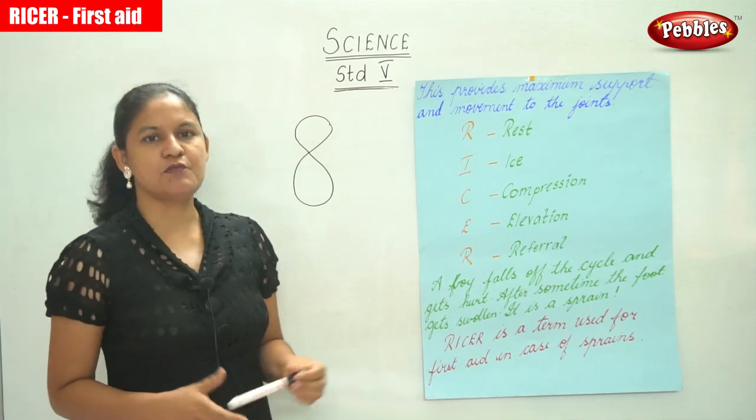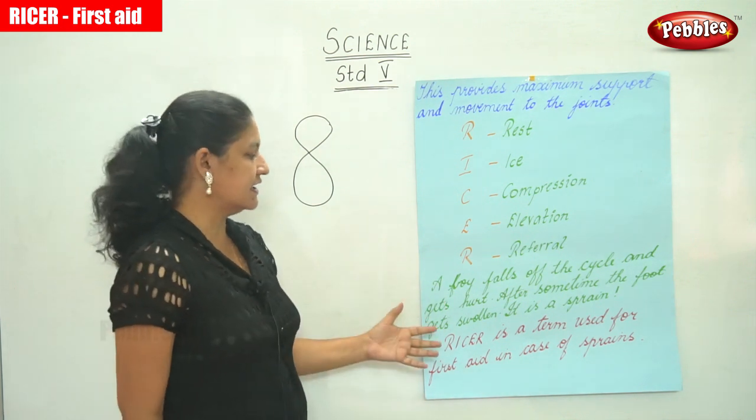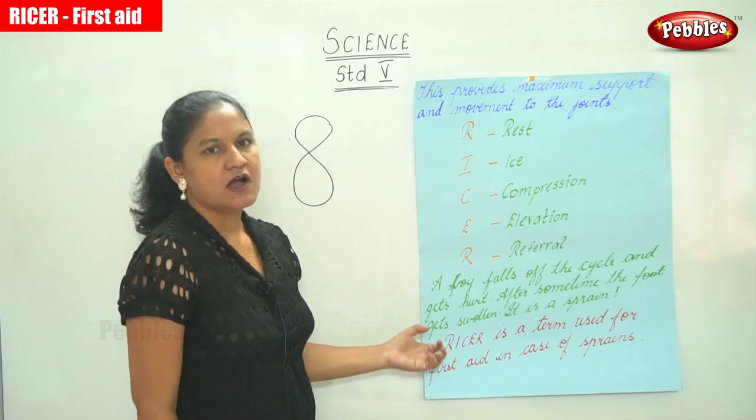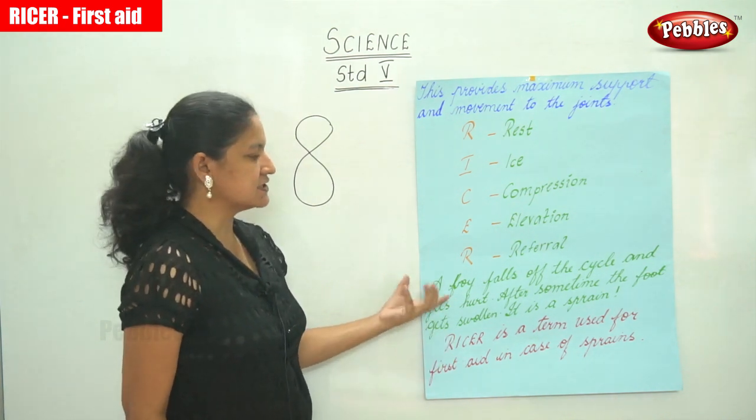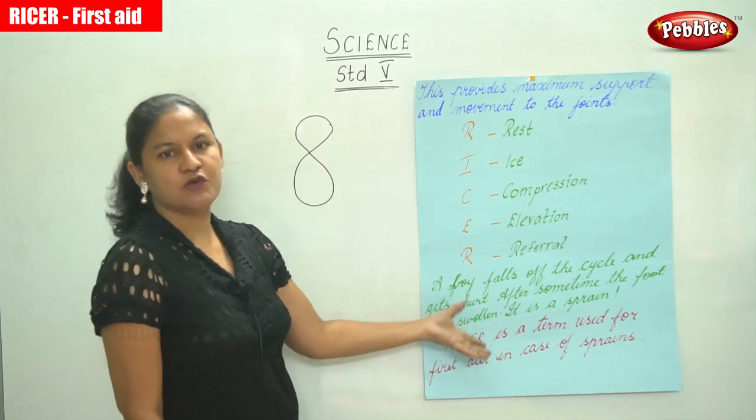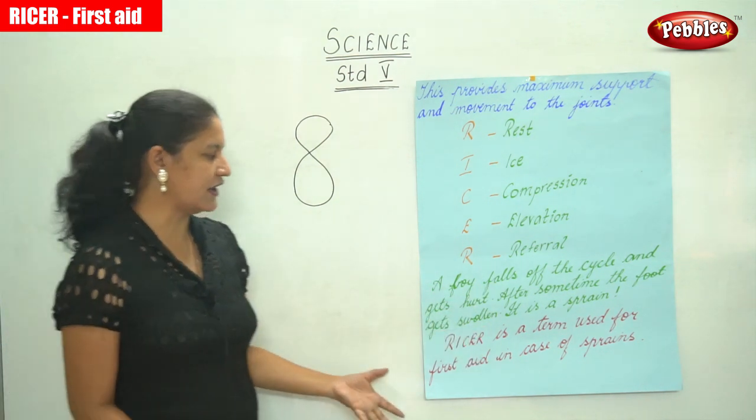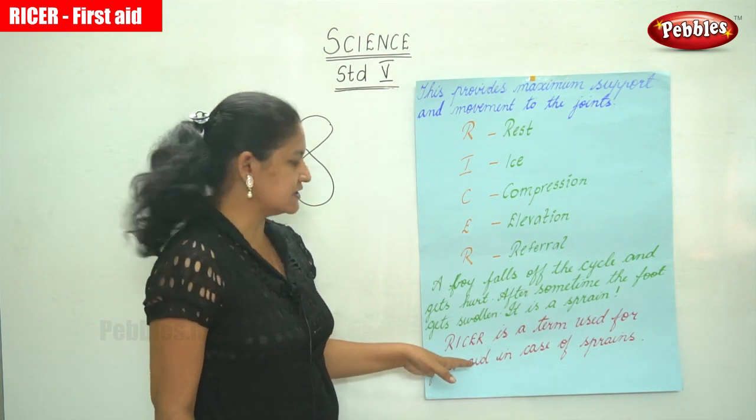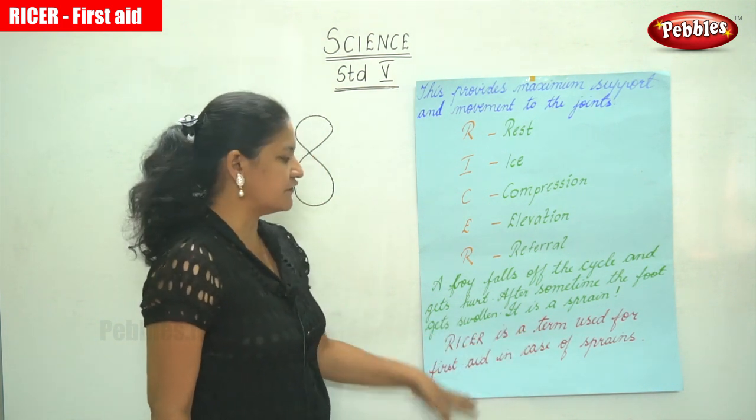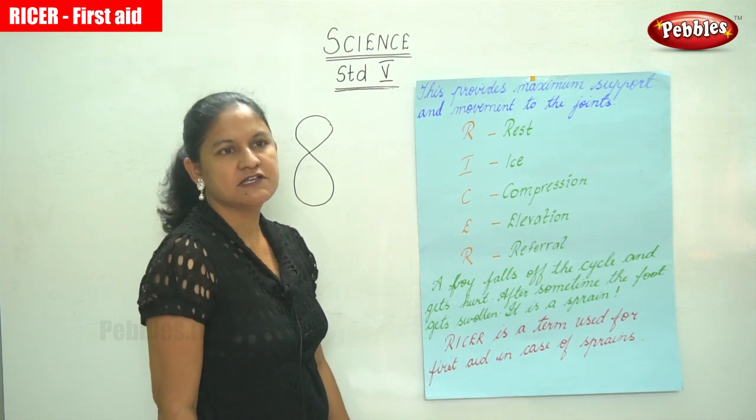An example is a boy falls off the cycle and gets hurt. After some time we find that the foot gets swollen, so then we know that it is a sprain. So we have to use this term RICER. This term RICER is a term used for first aid in case of sprains.